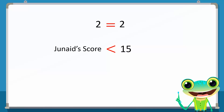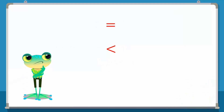This means Junaid can score runs from 0 to 14, but not 15. Can we show the less than or equal to symbols together? Yes, we can. In mathematics, we combine the less than and equal to symbols and get this new symbol.